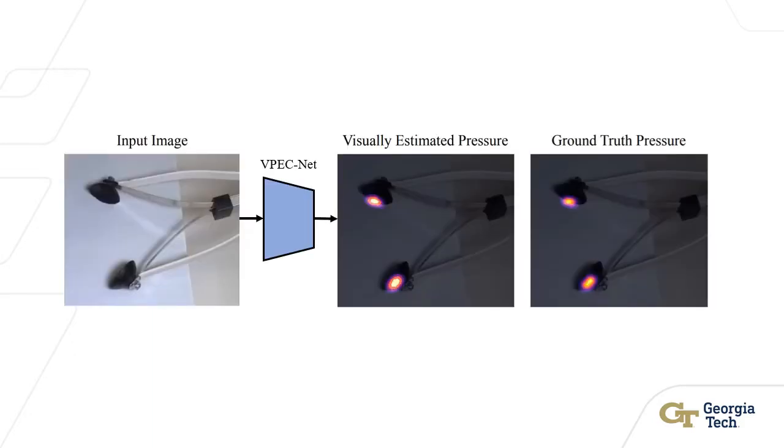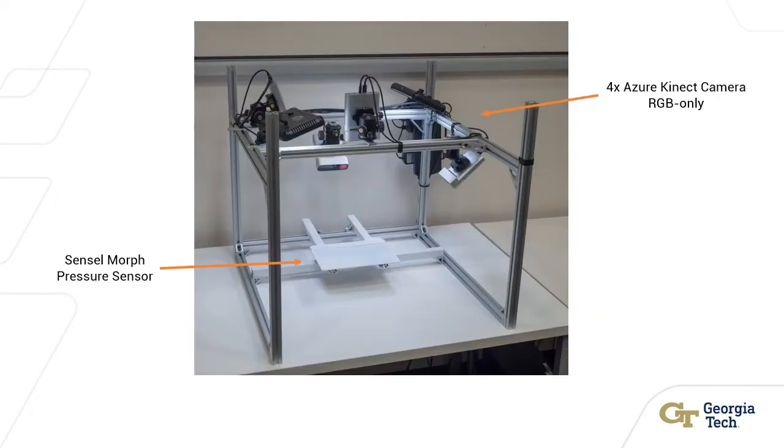In this paper, we show that given images of a soft gripper interacting with a planar surface, a CNN can be used to infer the pressure that the gripper applies.